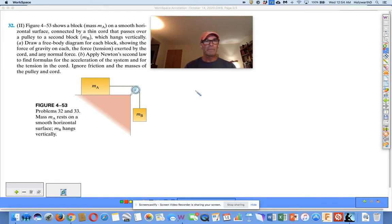Figure 4-53 shows a block M sub A on a smooth horizontal surface connected by a thin cord that passes over a pulley to a second block M sub B which hangs vertically. A, draw a free body diagram for each block showing the force of gravity on each, the force of tension exerted by the cord and any normal force. B, apply Newton's second law to find formulas for the acceleration of the system and for the tension in the cord. Ignore friction and the masses of the pulley and cord.